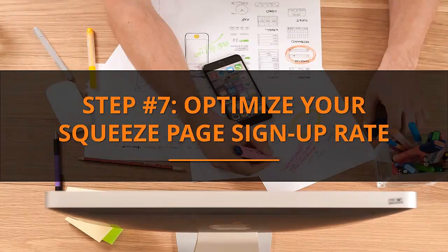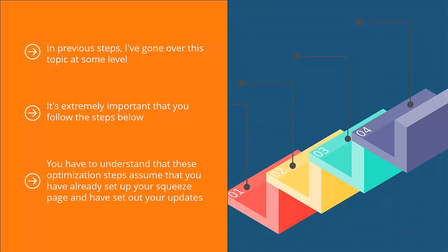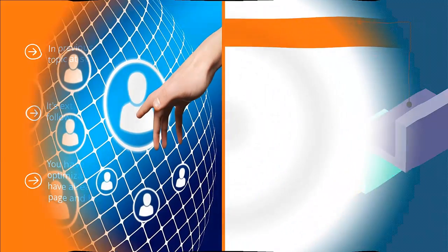Step number seven: optimize your squeeze page signup rate. In previous steps I've gone over this topic at some level, but optimizing your squeeze page plays a critical role in the success of your mailing list campaigns. You need to go through specialized steps to ensure your optimization efforts are correct. These optimization steps assume that you have already set up your squeeze page and have set out your updates, and that you've already optimized your squeeze page at some level. Here are further optimization ideas to maximize the conversion ability of your email list recruitment page.